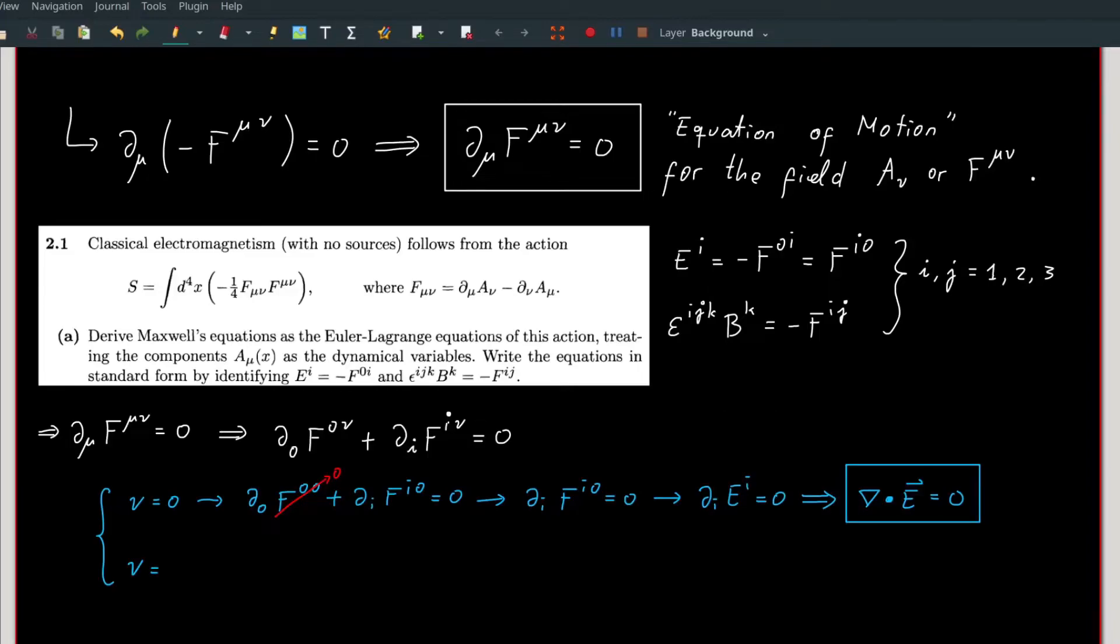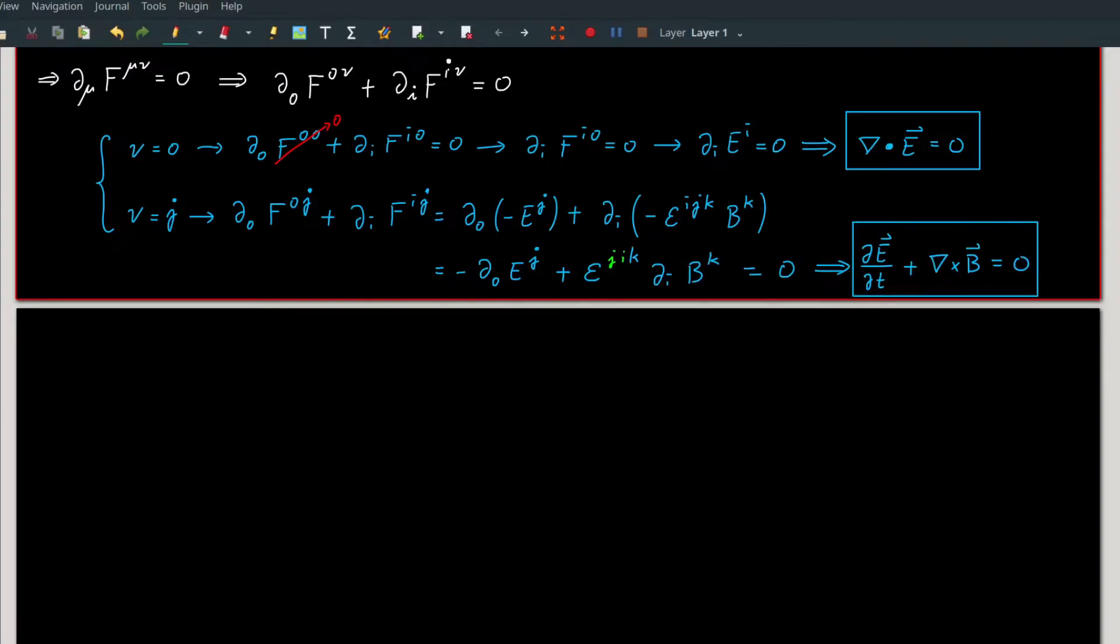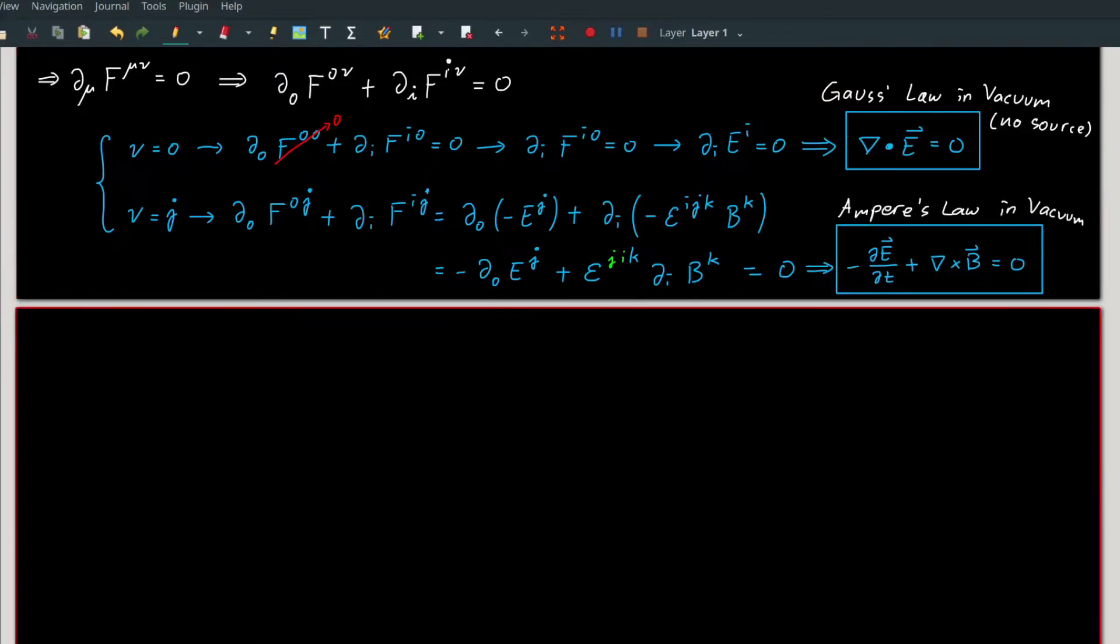Now, if nu is j, where j can be either 1, 2, or 3, we can identify f^{0j} in the first term as negative of the j-th component of E, while in the second term, f^{ij} is negative ε_{ijk} times the k-th component of B. We can make the negative sign in the second term disappear by swapping any of the epsilon indices. We can then go back to the standard vector notation, giving us Ampere's law in vacuum: curl of B minus time derivative of E is zero.